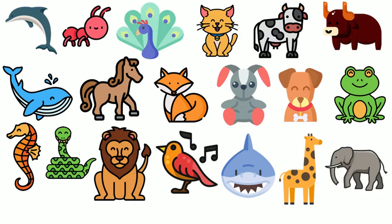Dog — Kutta. Frog — Medak. Seahorse — Samudri ghori. Snake — Saanth. Lion — Sheer.